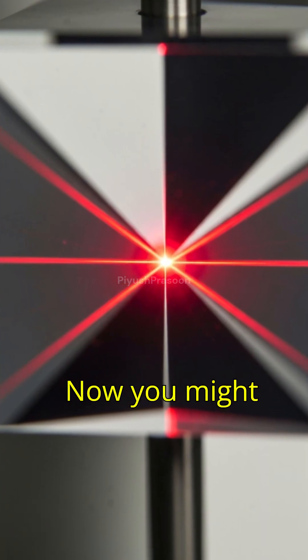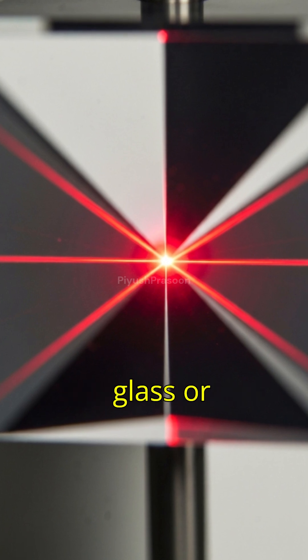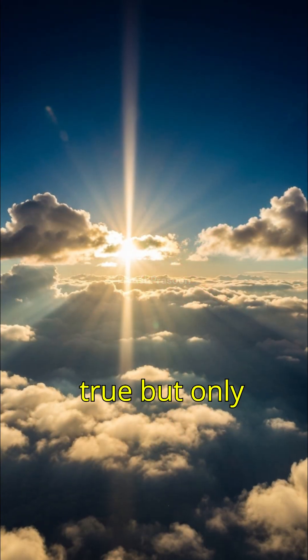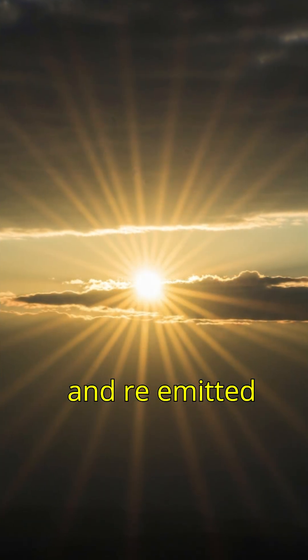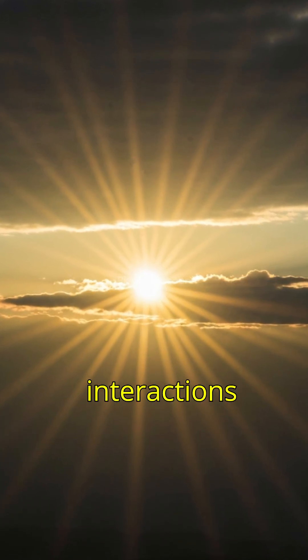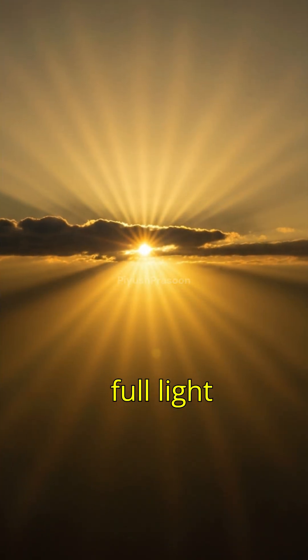Now you might have heard that light slows down in glass or water. That's true, but only because it keeps interacting with atoms, being absorbed and re-emitted again and again. Between those interactions, it's still traveling at full light speed.